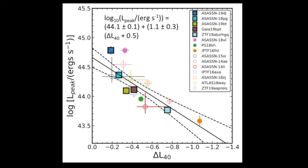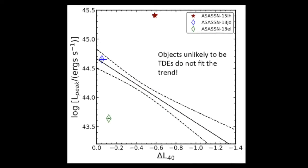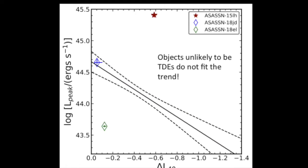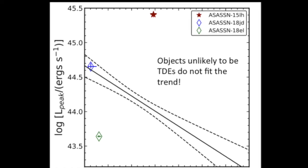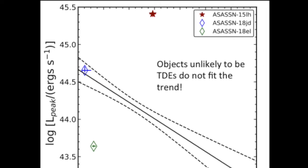We find a maximum correlation at 40 days and show the comparison between the log of the peak luminosity and the difference between the log luminosity at 40 days after peak and the log peak luminosity. The solid circles and squares are sources where we can accurately fit the bolometric peak, and open circles are sources for which this was not possible. We also find that objects unlikely to be TDEs do not fit our best-fit trend.